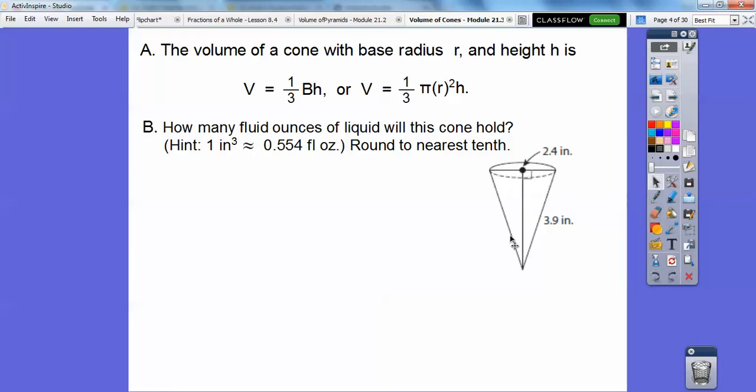So we'll find the volume of this in terms of inches and then we'll use our conversion, putting this on the bottom so the inches cancel and we're left with fluid ounces. So the volume is one-third the area of the base times the height.